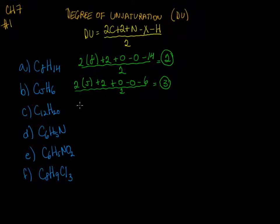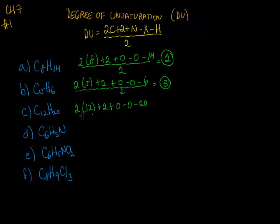I'll provide another video on how to calculate this from just looking at a structure. Here we have 12 carbons — don't forget to always do the plus two — zero nitrogens, zero halogens, 20 hydrogens, divide by two, and for this we get a whole number of three again.